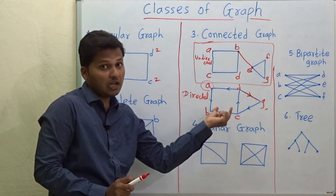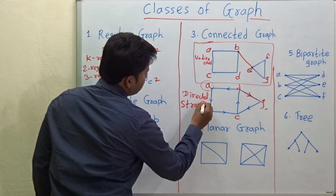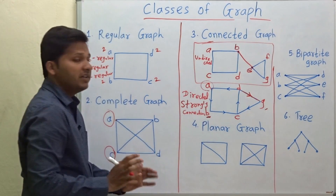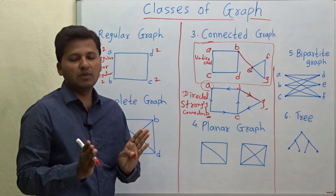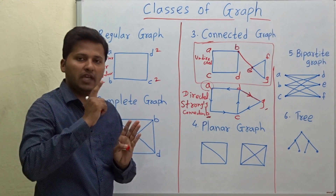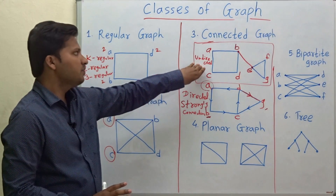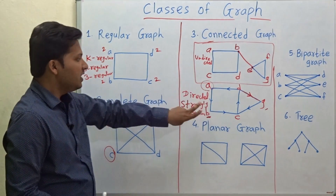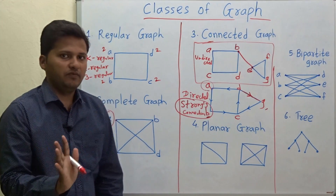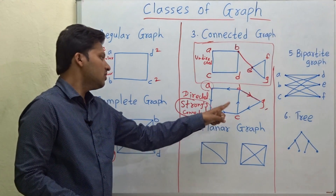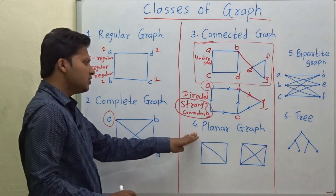In the case of directed graphs, this graph is called strongly connected. The property is the same for both undirected and directed graphs — you can reach from any vertex to any other vertex. But for an undirected graph the term is 'connected', and for a directed graph we say it is 'strongly connected'.